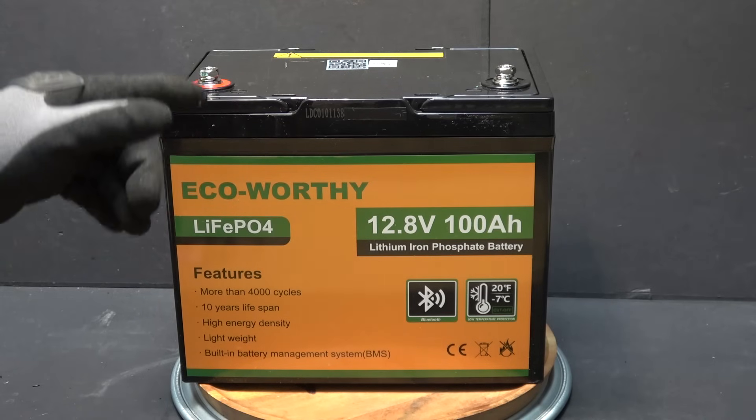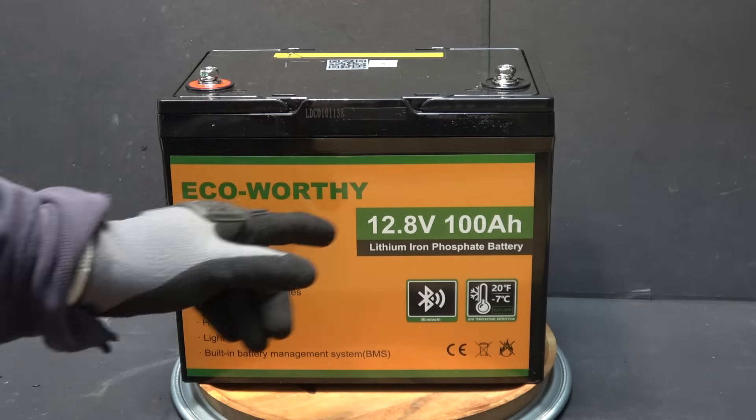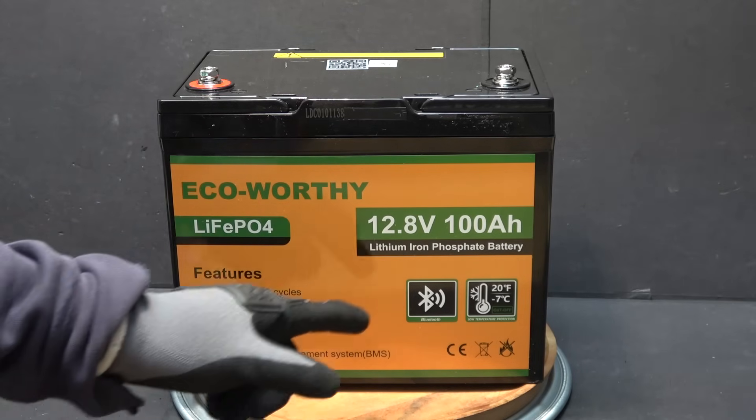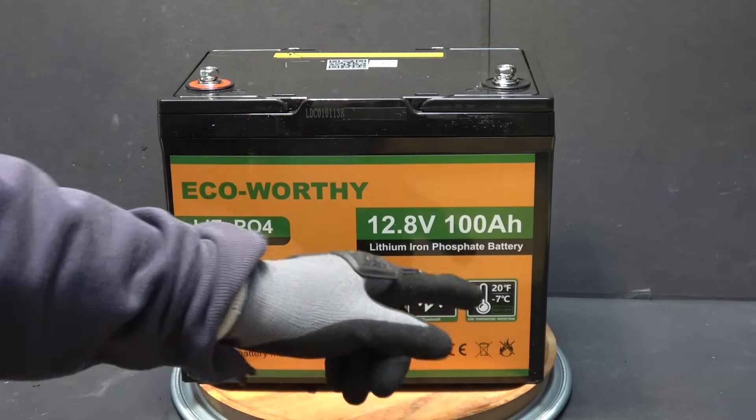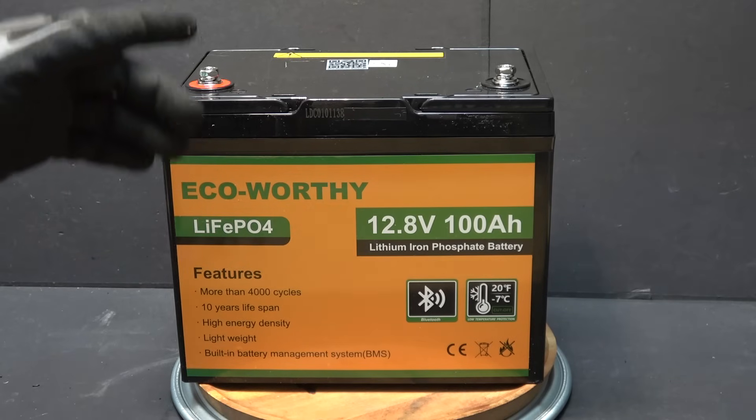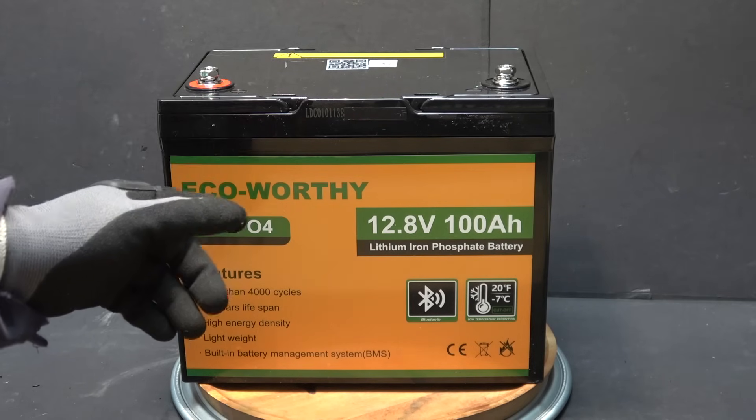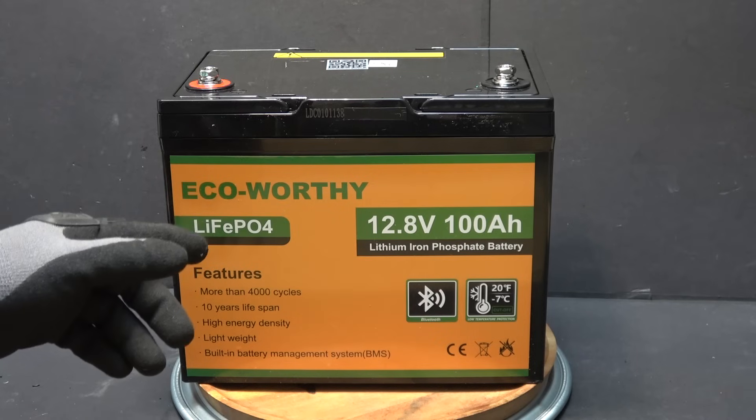So today I'm going to be reviewing this lithium iron phosphate 12.8 volt 100 amp hour battery. It has Bluetooth and low temperature protection. I'm also going to do a teardown and open up this battery and show you what's inside. Let's get started.